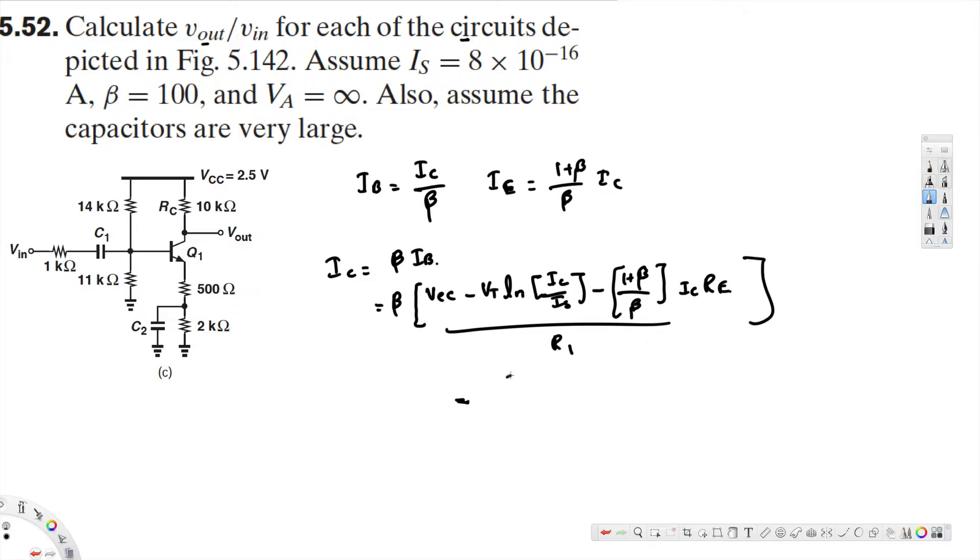V_CC minus V_T ln of I_C over I_S plus 1 plus beta over beta I_C R_E divided by R2.